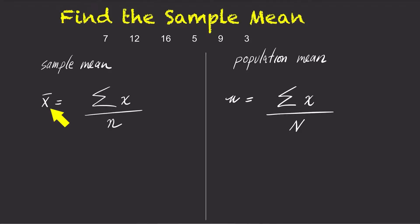For sample data, we use x bar to represent the sample mean, and a lowercase n to represent the sample size. For population data, we use mu to represent the population mean, and a capital N to represent the population size.